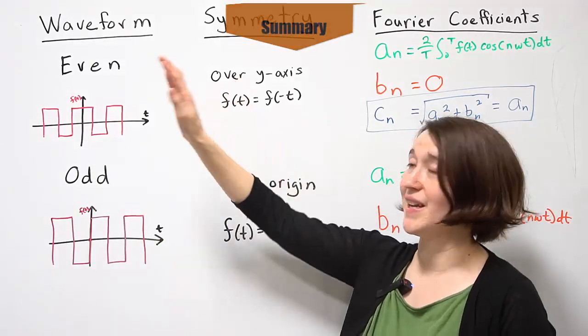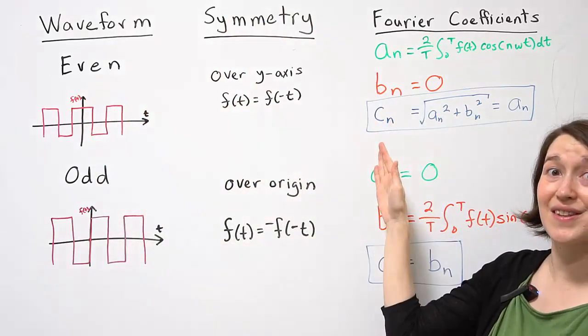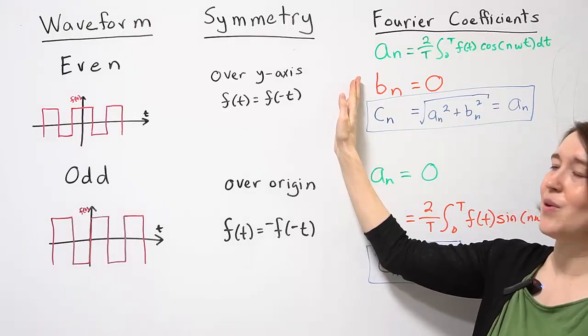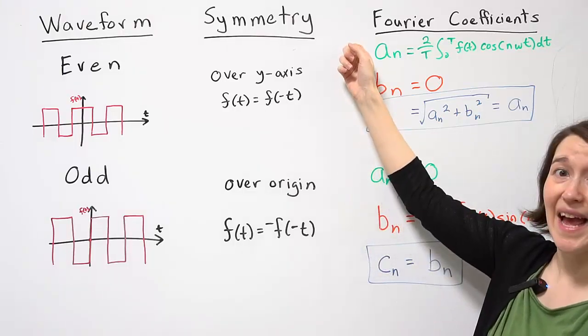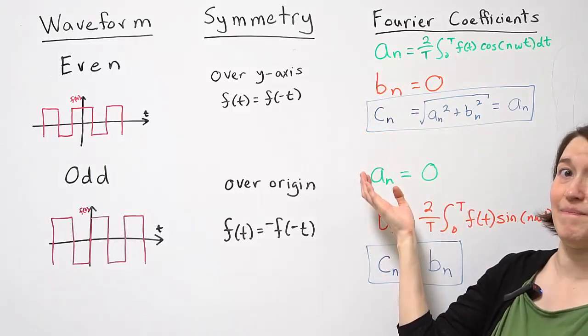In summary, if you have an even waveform and you want to find the Fourier coefficients, we know that Bn is 0, so you can solve for just An, and that term will be exactly the same as Cn.